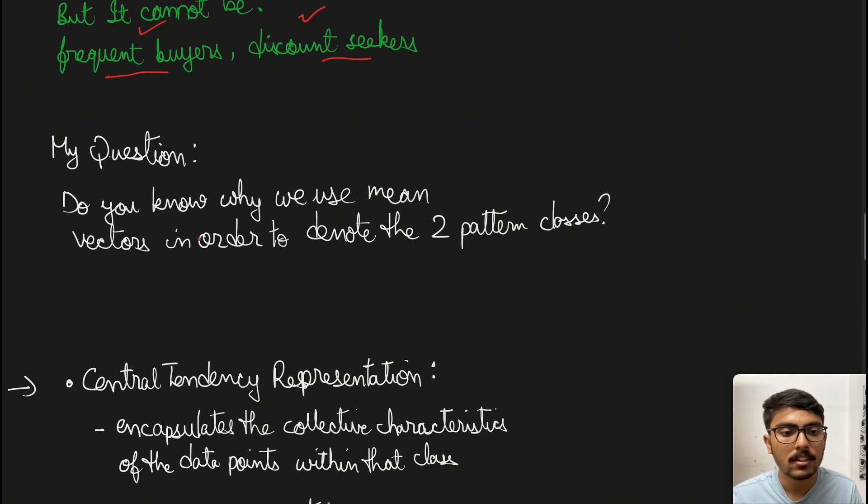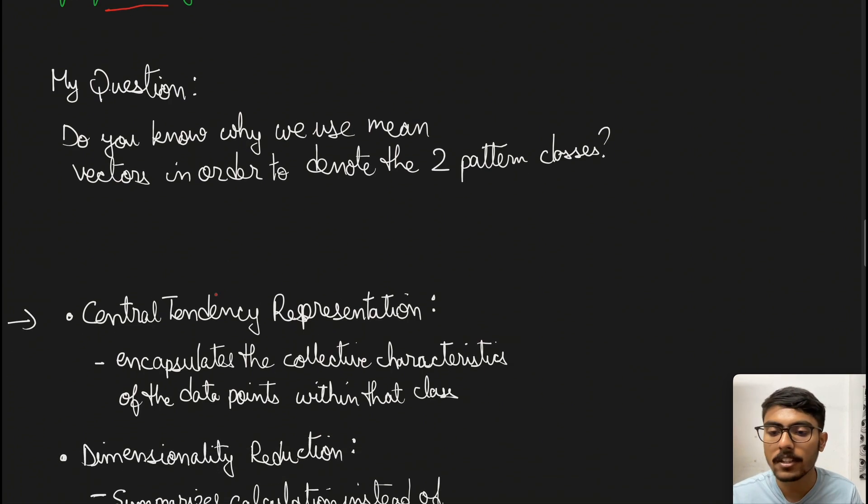First is central tendency representation. When we choose a mean in a pattern class, it encapsulates the collective characteristics of the data points within that class. We're expecting the entire class to be represented by that single instance or mean value. This central tendency is only possible by using the mean vector.